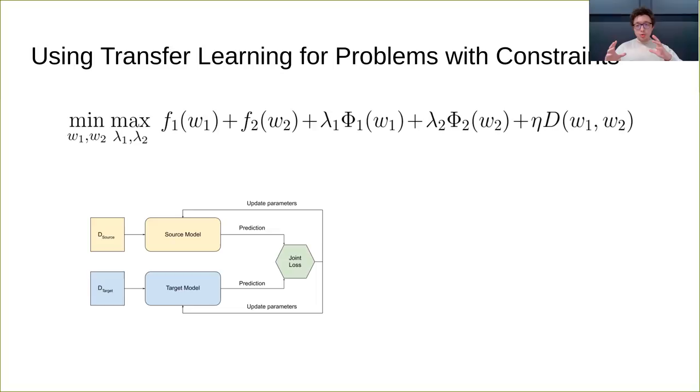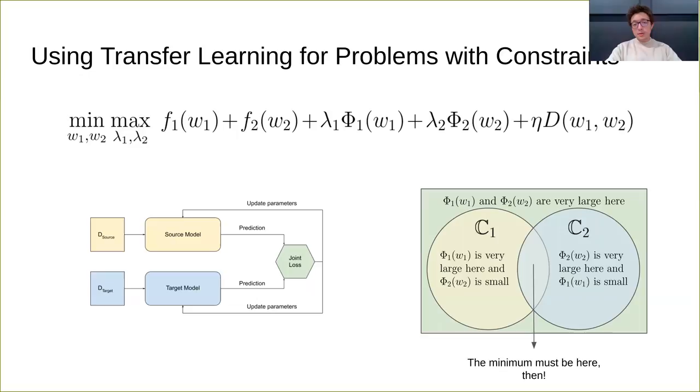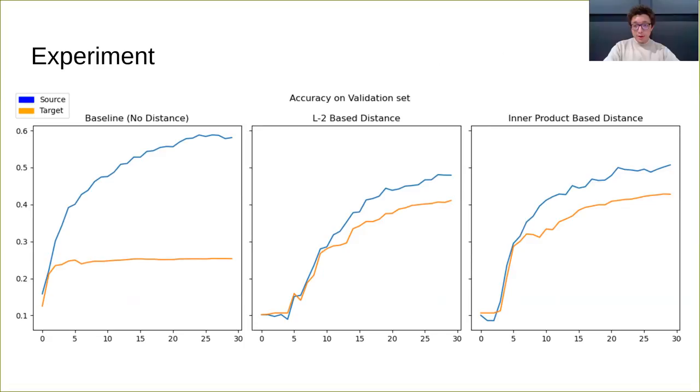We train both models simultaneously using a joint loss function. The idea is that because we cannot copy and paste knowledge since we're training them simultaneously, we rely on the distance metric to ensure knowledge transfer. The indicator functions ensure that our model fulfills the constraints, because if the models are outside of the constraint sets, the indicator functions will be very large. Since we're minimizing the problem, this ensures that the minimum is inside the constraint sets.